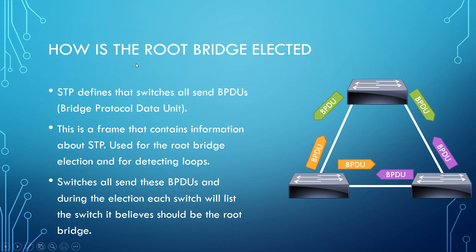The way loop detection works: if a switch were to send a BPDU out on a link and then receive that same BPDU back on another link, it knows that a loop exists. It's thinking: I sent a BPDU out this link and received the exact same BPDU via another link. The only way that could have happened is if that BPDU looped around and got back to me, meaning there's a loop in the network and STP needs to block one of those redundant links.